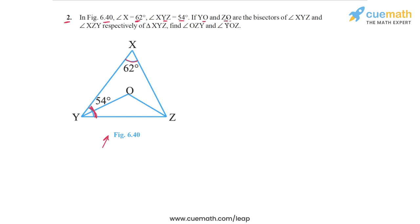If YO and ZO are the bisectors of angle XYZ and angle XZY, let's actually highlight these bisectors. So YO is the bisector of angle XYZ and ZO is the bisector of angle XZY.